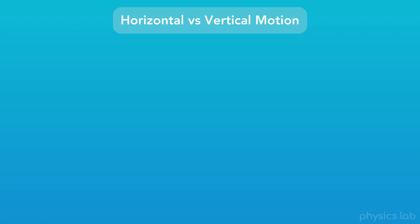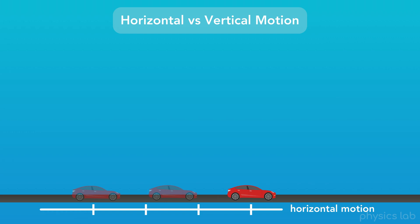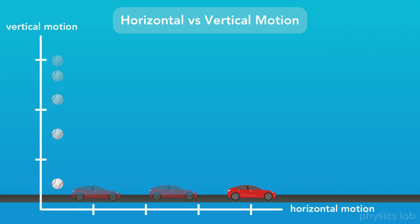Before we wrap up with kinematic equations, there's one more thing we need to cover, and that's the variables that we use for horizontal and vertical motion. We're learning about linear motion, or motion along a straight line. Mostly, we've talked about a car driving along a road, which would be horizontal motion. But we can also have vertical motion, like if we dropped a ball from some height and let it fall down. The car and the ball are both examples of linear motion, but in different directions. In physics, we typically use x to represent horizontal motion, and y to represent vertical motion.